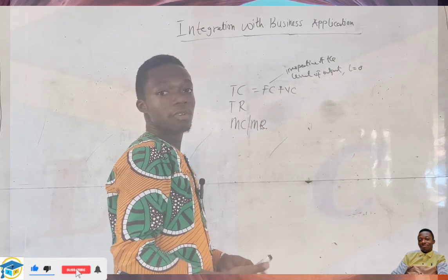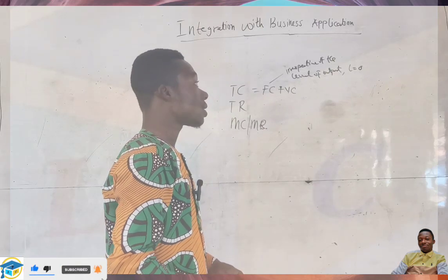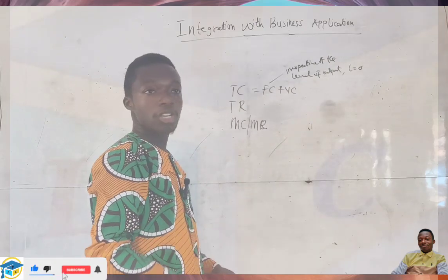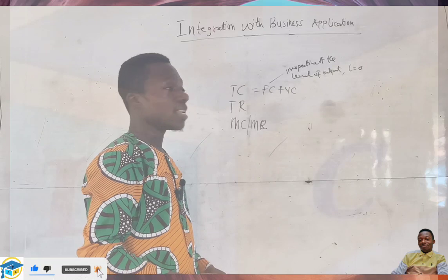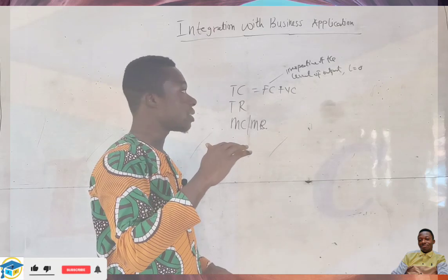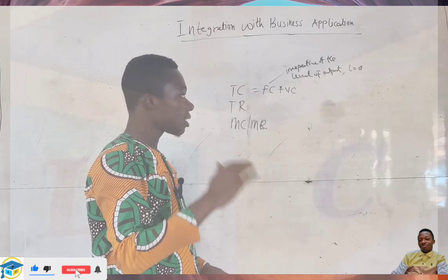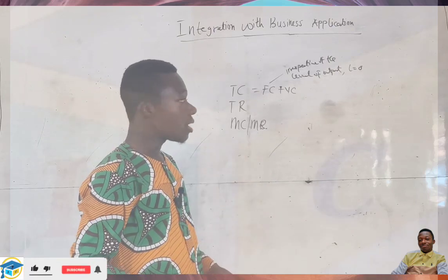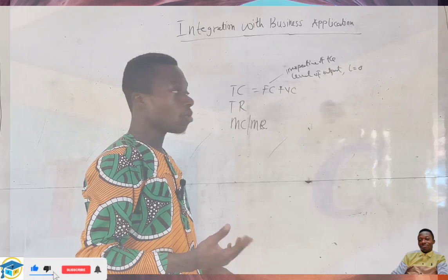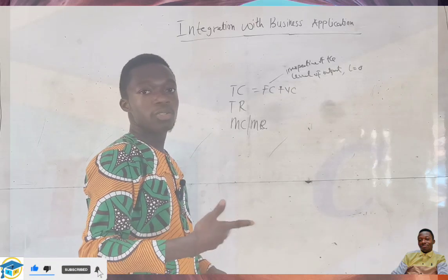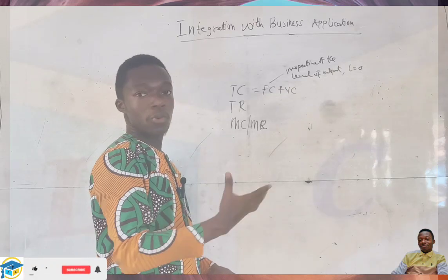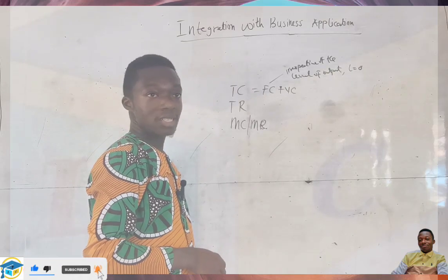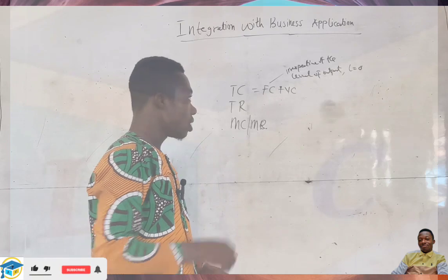We also said that variable cost is a cost that responds to the level of output or sales, irrespective of whether it increases or decreases. As and when output increases, variable cost increases; as and when output decreases, variable cost also decreases. So variable cost changes with respect to the level of output.